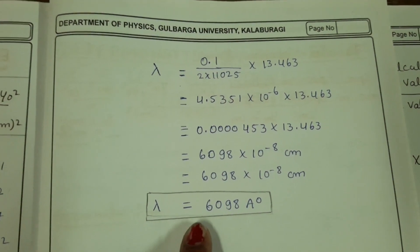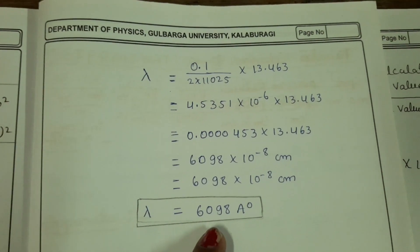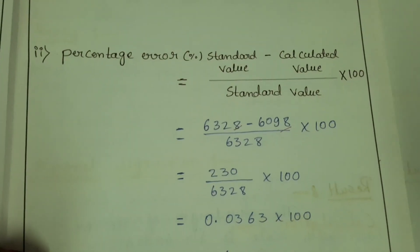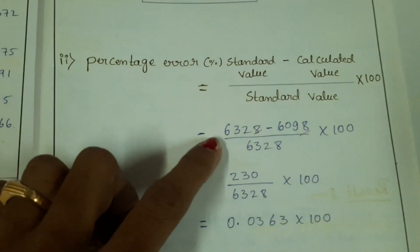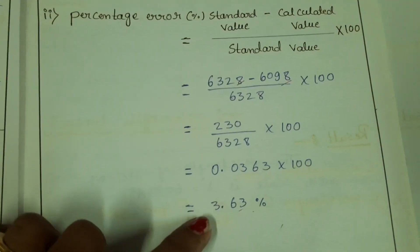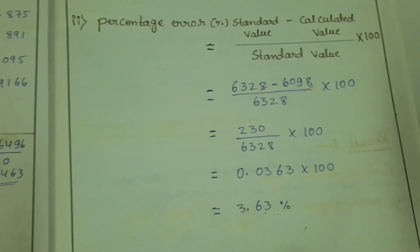In this experiment, they got 6098 angstrom. You can calculate the percentage error using standard value. You will get about 3.63 percent error for this.